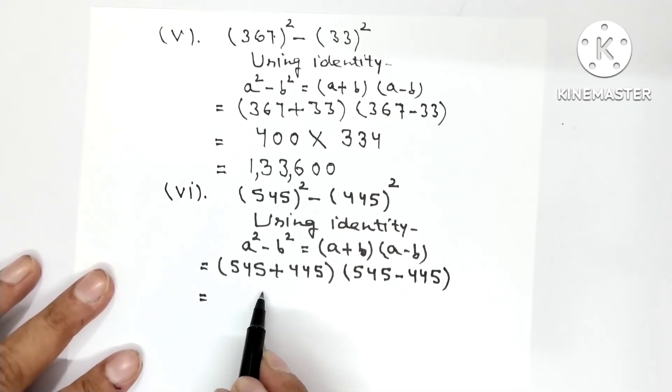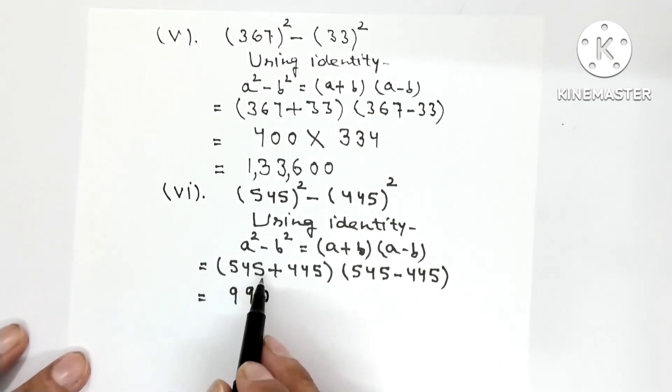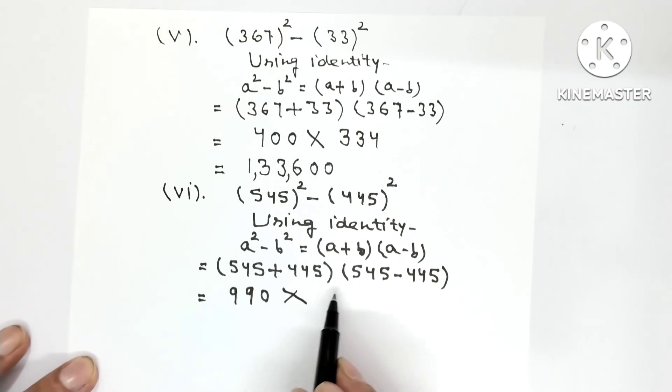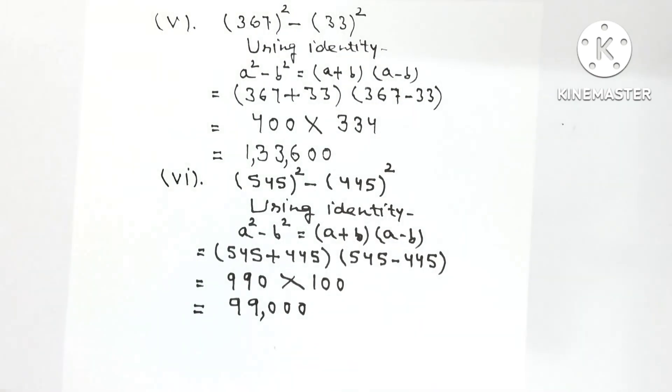One bracket will have 545 plus 445 into 545 minus 445. Now you add these. 5, 5, 10. 4, 4, 8 and 1, 9. And 5 plus 4, 9. Into, if we subtract 445 from 545 we get 100. So 990 into 100. And after that 3 zeros. So the answer is 99,000.